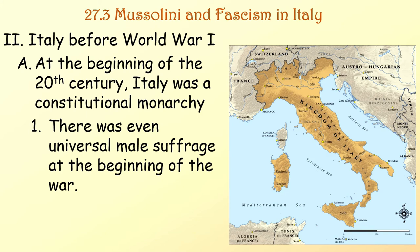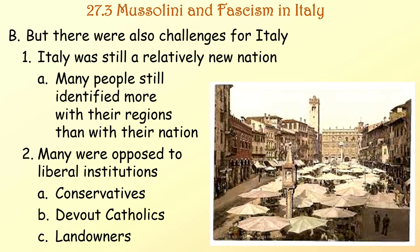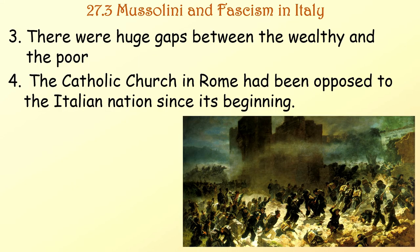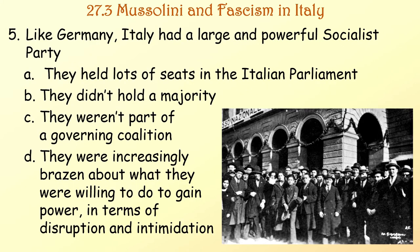Italy before World War I: At the beginning of the 20th century, Italy was a constitutional monarchy with universal male suffrage. But there were also challenges. Italy was still a relatively new nation, and many people identified more with their regions than with their nation. Many were opposed to liberal institutions — conservatives, devout Catholics, and landowners. There were huge gaps between wealthy and poor, and the Catholic Church had been opposed to the Italian nation since its beginning. Like Germany, Italy had a large and powerful socialist party with many seats in parliament, and they were increasingly brazen about disruption and intimidation to gain power.